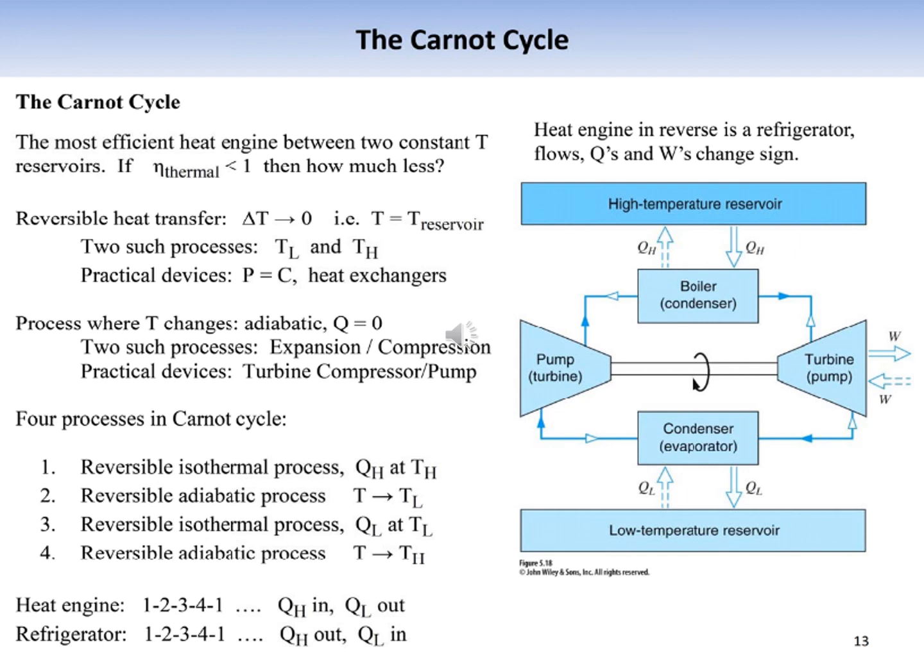Since all heat engine efficiencies are less than 100%, what is the most efficient cycle? For a heat engine operating between a high temperature and low temperature reservoir, if every process in the cycle is reversible, the cycle itself is reversible, and if reversed, the heat engine becomes a refrigerator. This is the most efficient cycle that can operate between two constant temperature reservoirs.